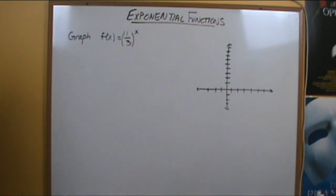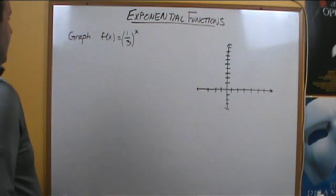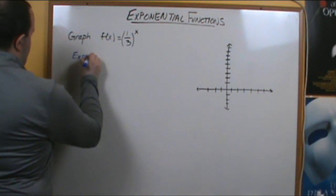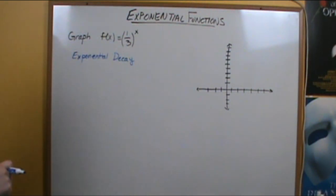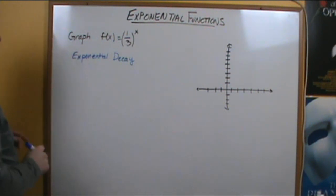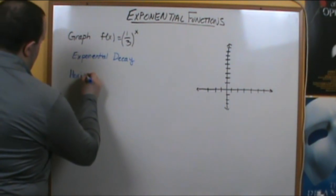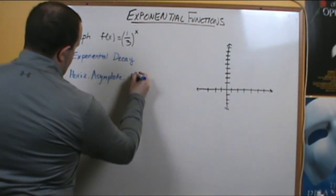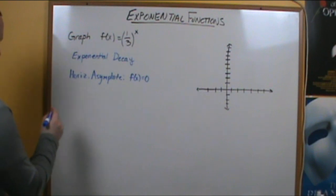Now let's talk about an exponential decay function. Our value of b here is 1 third, so that is going to be exponential decay. There is no horizontal shift, so our horizontal asymptote is at the x-axis: f of x equals 0. To graph this, we'll use a table of values.